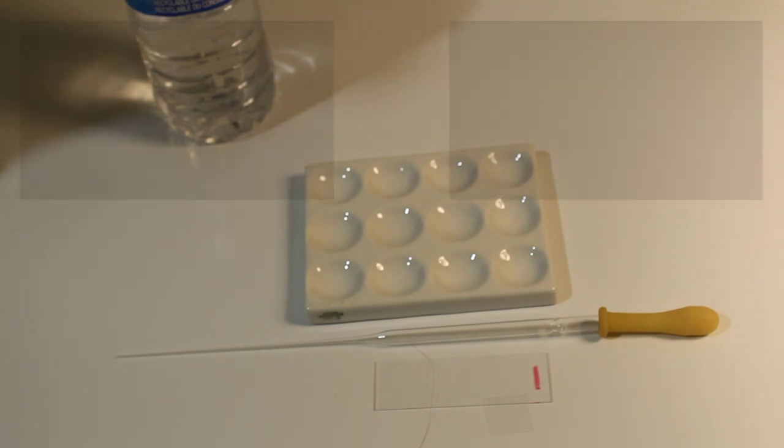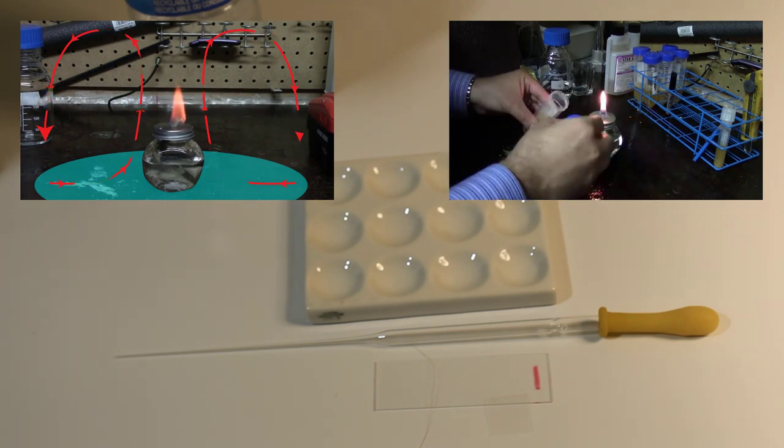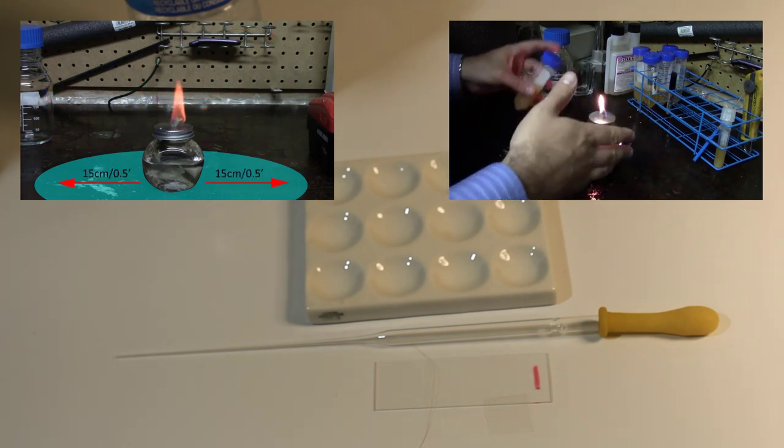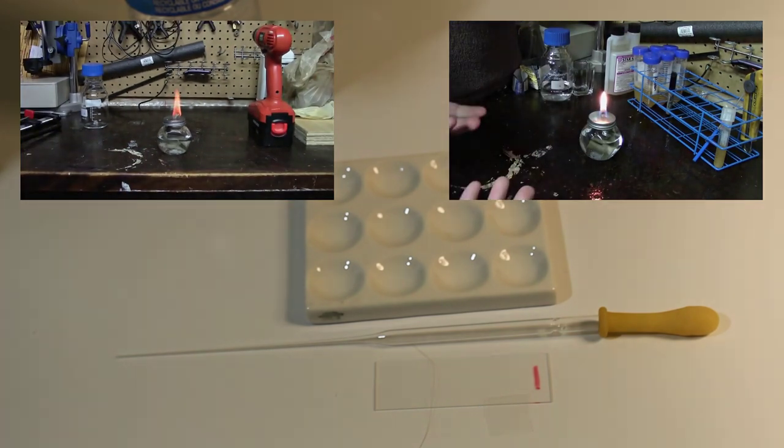If needed, you can also use a Bunsen burner or alcohol lamp, as well as proper aseptic techniques to help maintain your yeast culture in an uncontaminated state. For more on this, please see my videos in the Home Yeast Lab Made Easy series.